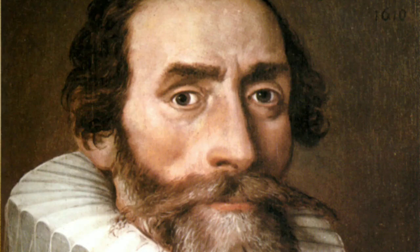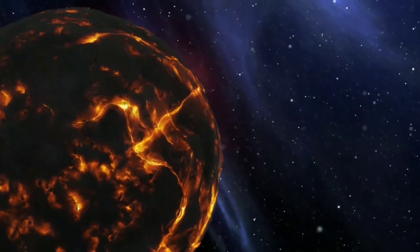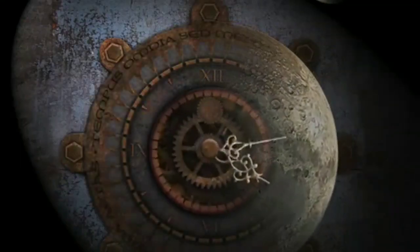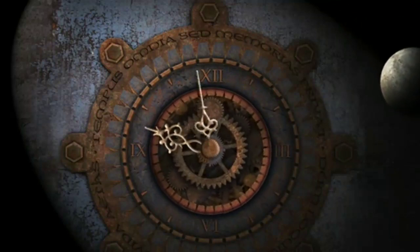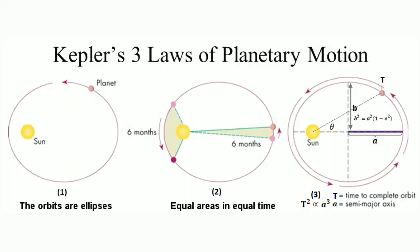You might have heard about Johannes Kepler, one of the most important persons who studied the motion of planets around the sun, the motion of moon around the earth. In 1600s, Johannes Kepler proposed three laws of planetary motion.